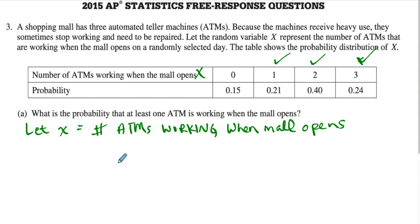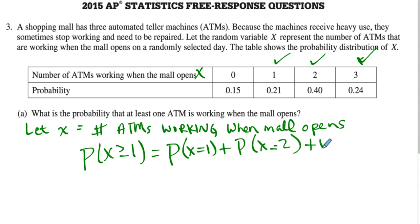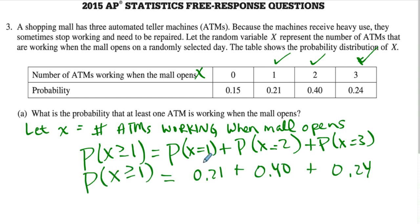You can't just put an answer down — you've got to show how you got your answer. So the probability that X, the number of ATMs, is at least one is P(X ≥ 1). That equals the probability that X equals one, plus the probability that X equals two, plus the probability that X equals three. I'm communicating what I'm doing — don't just add the numbers and put the answer down. After substituting all the probabilities in, the probability that X is greater than or equal to one equals 0.85.